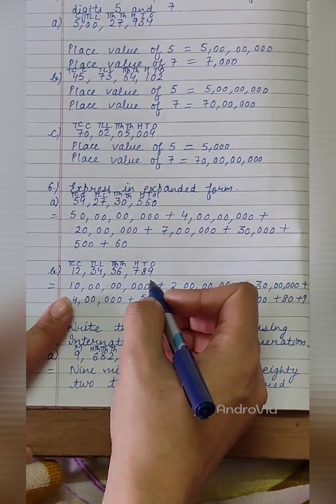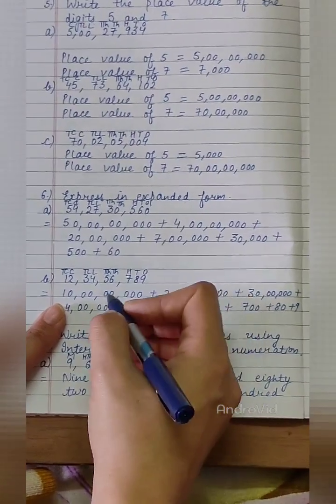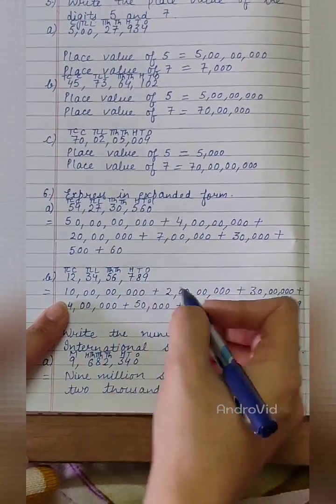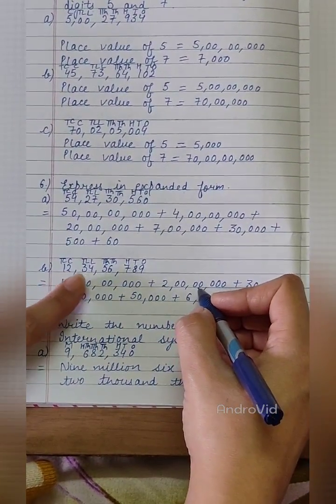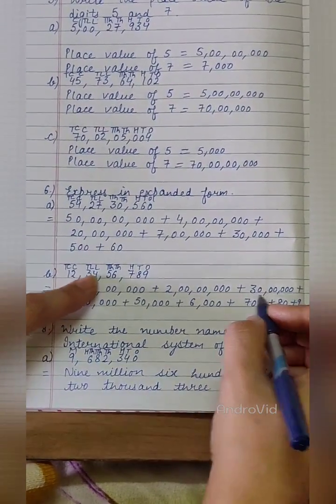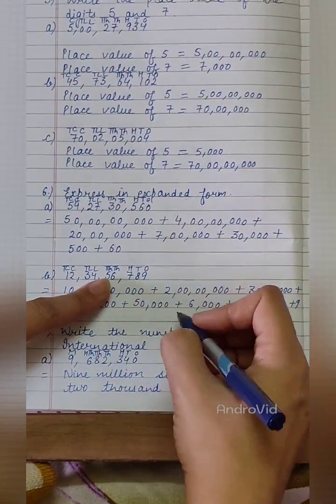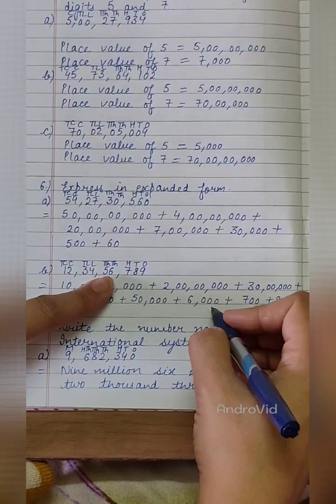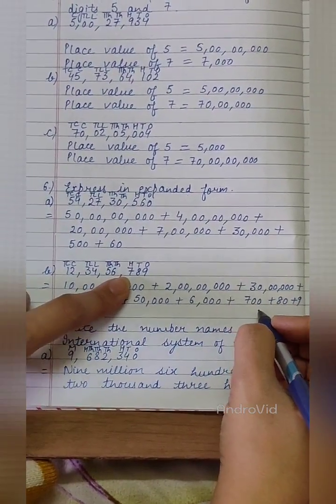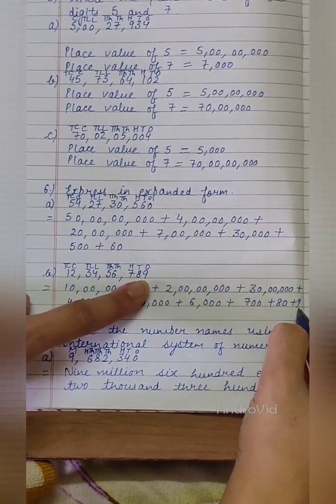According to the position of the digits, we will write here 10 crore plus 2 crore plus 30 lakhs, plus 4 lakhs, plus 50,000, plus 6,000, plus 700, plus 80, plus 9.